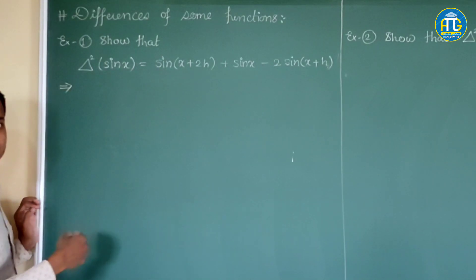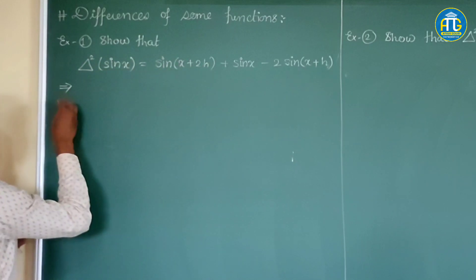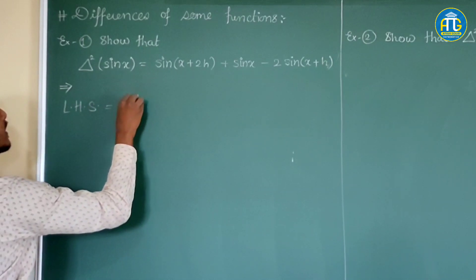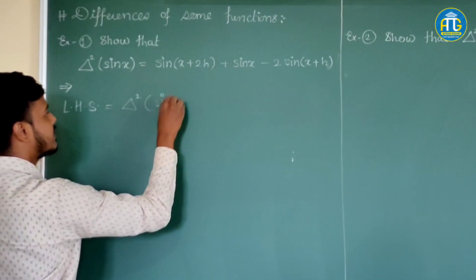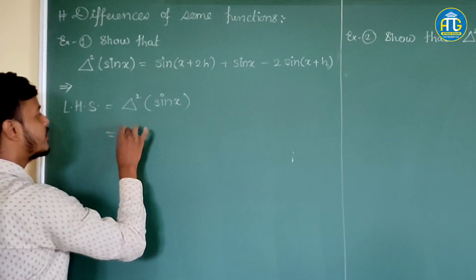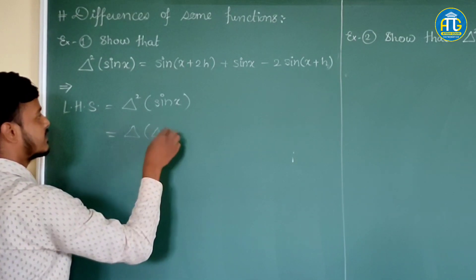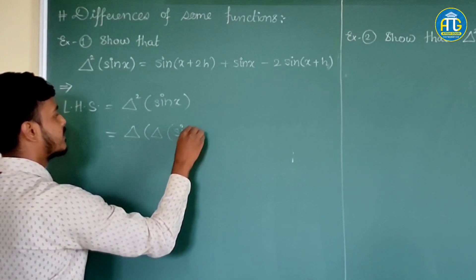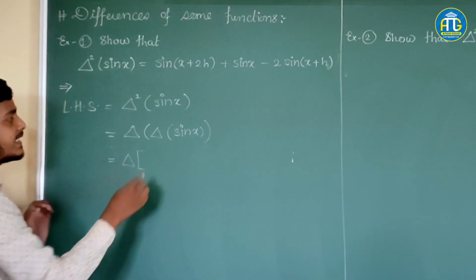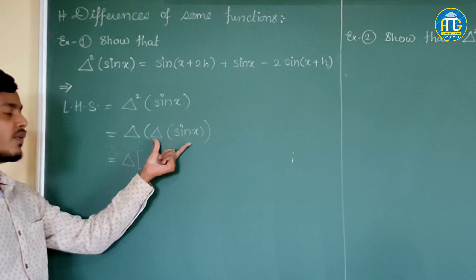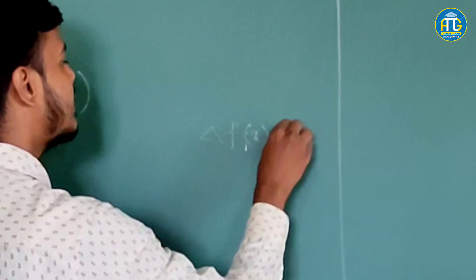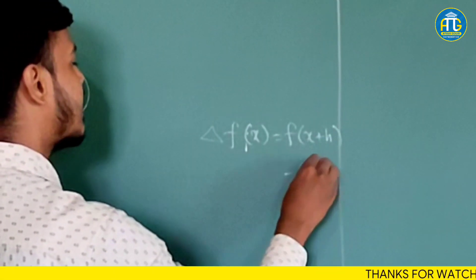We will solve this by LHS equal to RHS. LHS is equal to Δ² of sin x, which is the difference of difference of sin x. The definition of forward difference is: Δf(x) = f(x+h) − f(x). Applying the first forward difference gives sin(x+h) − sin(x).